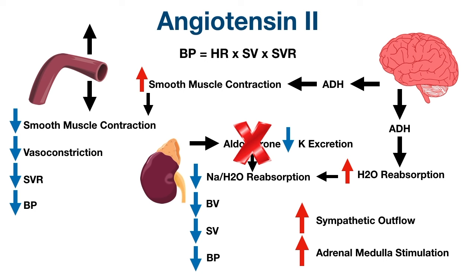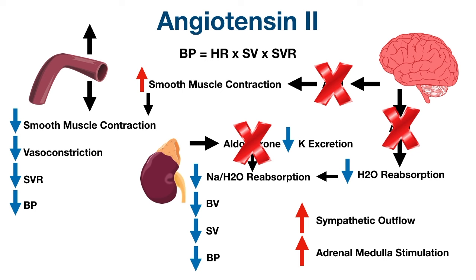ACE inhibitors also decrease the release of antidiuretic hormone from the posterior pituitary by lowering angiotensin 2. With less antidiuretic hormone, there is decreased water reabsorption in the collecting ducts, resulting in decreased blood volume, stroke volume, and blood pressure. Additionally, with lower vasopressin levels, there is decreased vascular smooth muscle contraction, less vasoconstriction, decreased systemic vascular resistance, and decreased blood pressure.